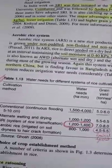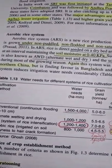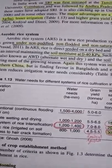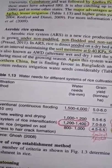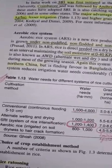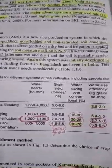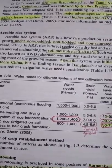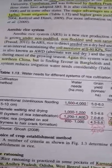In ARS, we do alternate wetting and drying conditions. This question is very important and was asked once in a physical sciences JRF paper — alternate wetting and drying is done during most of the growing season. The system was initiated in Northern China but aerobic rice is also favored in Bangladesh and even in India.